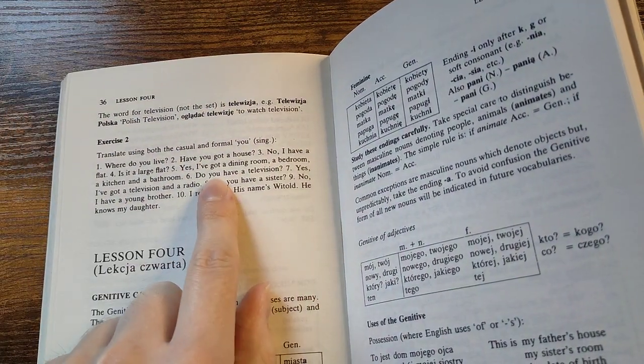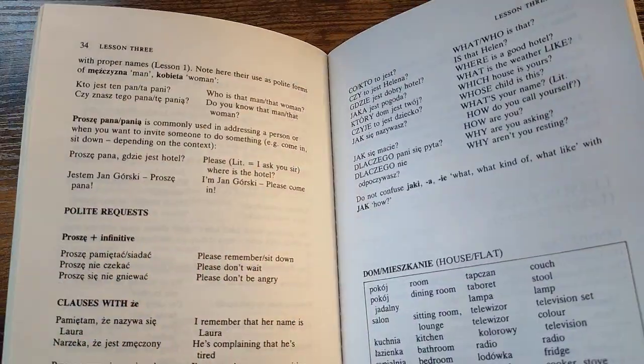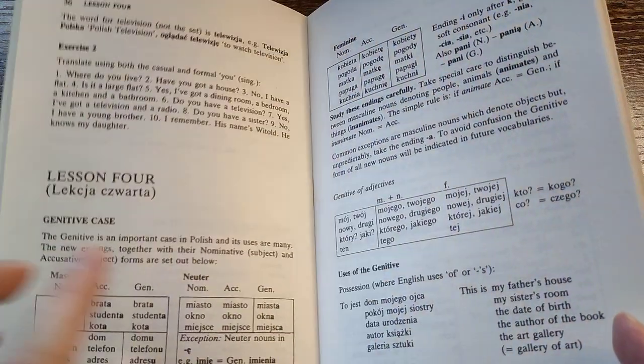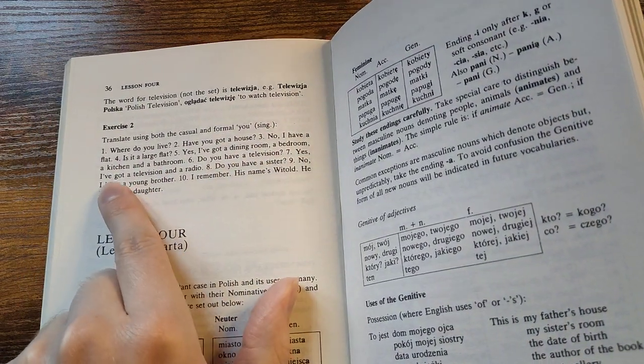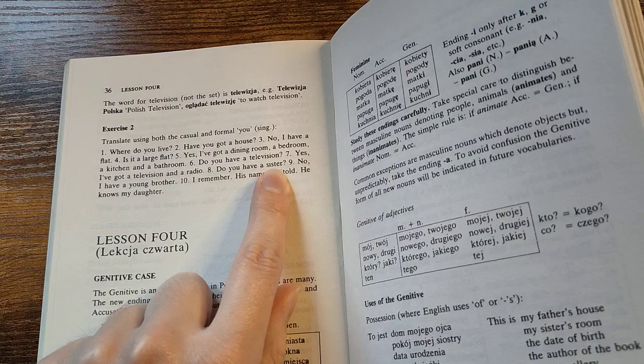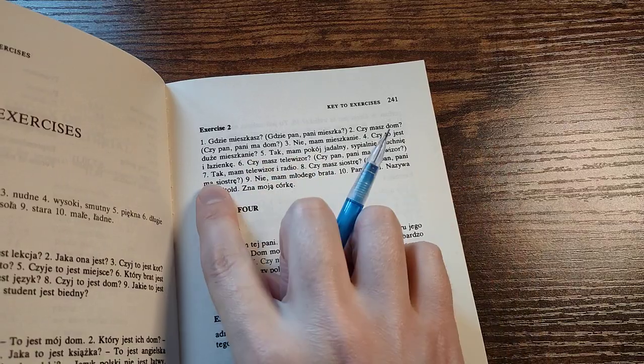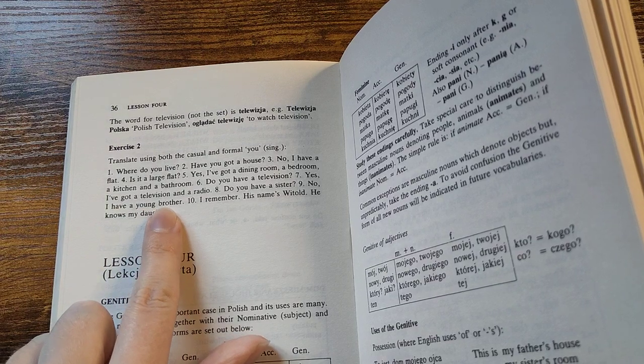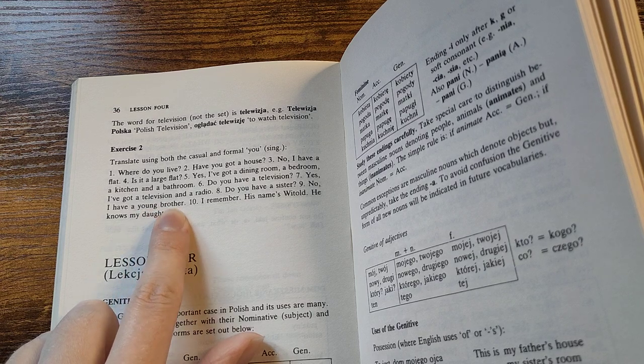Do you have a TV? There is a TV? Television. Do you have television? Yes, I have television and radio. Do you have sisters? No I have a younger brother. Mladse brata.